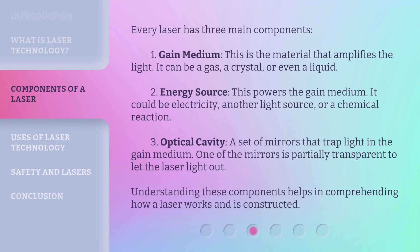Every laser has three main components. One: gain medium — this is the material that amplifies the light; it can be a gas, a crystal, or even a liquid. Two: energy source — this powers the gain medium; it could be electricity, another light source, or a chemical reaction. Three: optical cavity — a set of mirrors that trap light in the gain medium; one of the mirrors is partially transparent to let the laser light out. Understanding these components helps in comprehending how a laser works and is constructed.